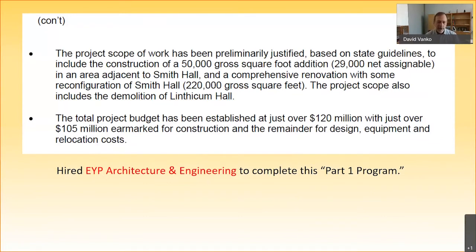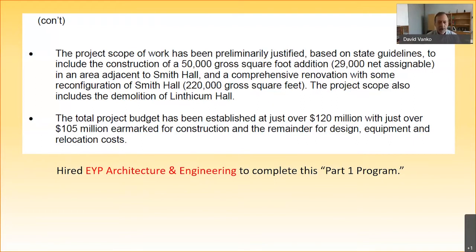This was the kickoff telling us we needed to start working on our project. The project scope was going to be a 50,000 square foot addition to Smith Hall, which was already 220,000 square feet, and then a complete renovation of Smith Hall — build and then renovate — in three phases: build, occupy, renovate, move, renovate, and be done. The total project budget was about $120 million, with just over $105 million earmarked for construction. A company called EYP Architecture and Engineering was hired to help us develop the initial program for this building — to look at what we needed and where we were headed in terms of enrollment and teaching and research in the sciences.